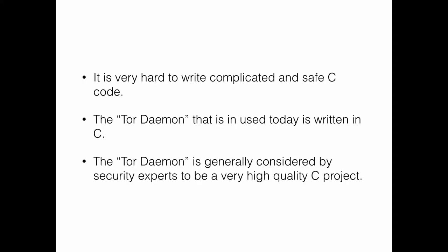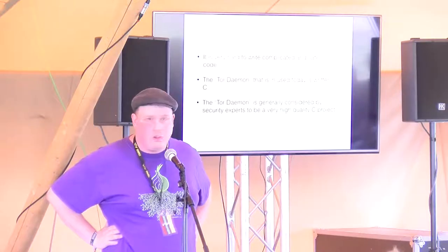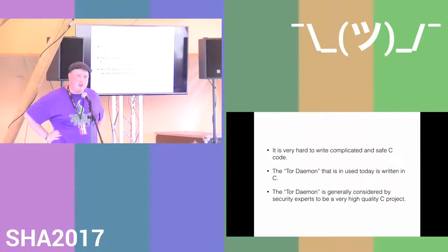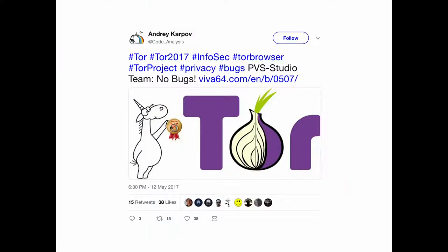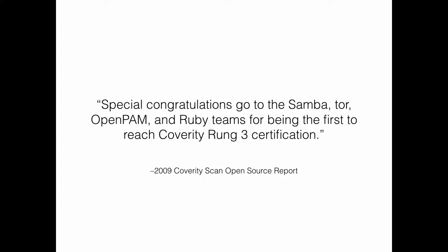It's hard to write complicated C code — we know that from history with a lot of projects having severe security issues each week. The Tor daemon is a very high quality piece of C code in general. PVS Studio, a proprietary static code analyzer, went over the Tor source code recently and couldn't find any bugs with it. Coverity, another static code analyzer, also ran tests and gave Tor a Rung 3 certification back in 2009. You can Google this report to find the explicit summary.